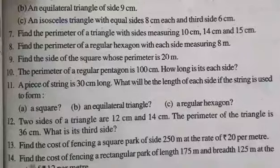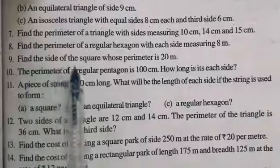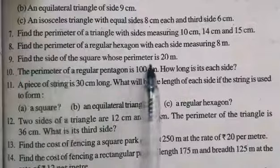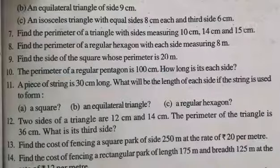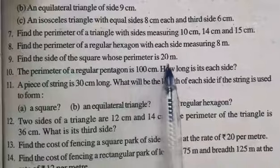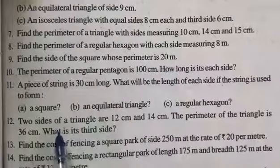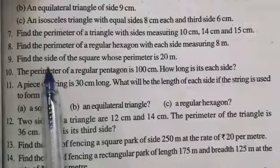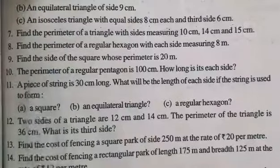Question number 9: Find the side of the square whose perimeter is 20 meters. What is given in the question is that the perimeter of the square is 20 meters. We have to find the measurement of each side of the square.